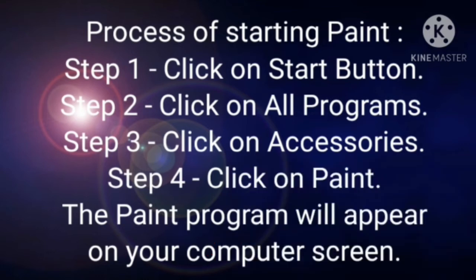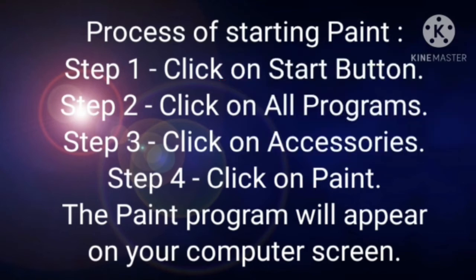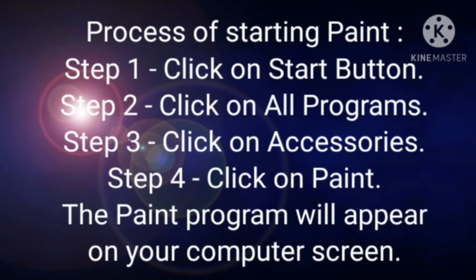Step 4: Click on Paint. After clicking Accessories, the Paint option will appear — click on it. That was your last step. After that, write below: The Paint program will appear on your computer screen. After you click on Paint, the Paint screen will open in front of you. That completes the meaning of Paint and the Process of Starting Paint.